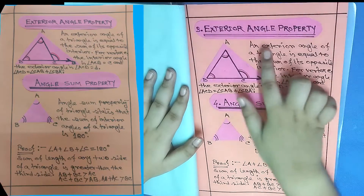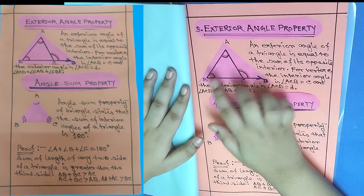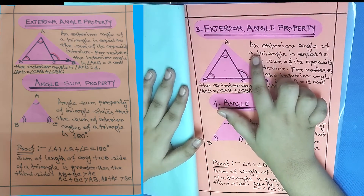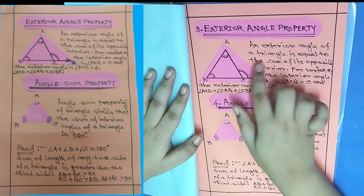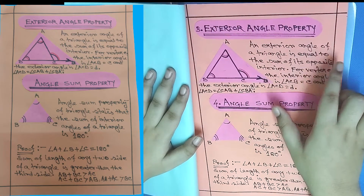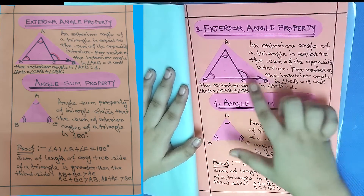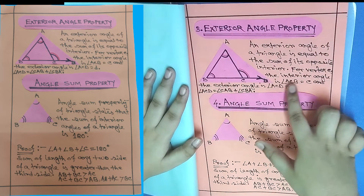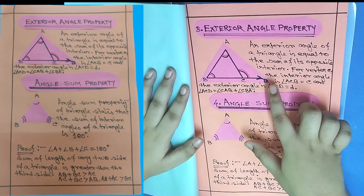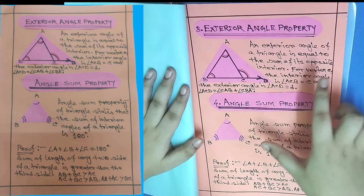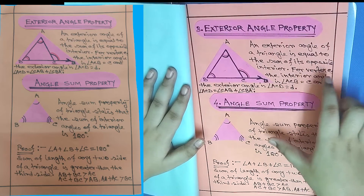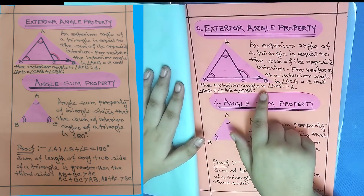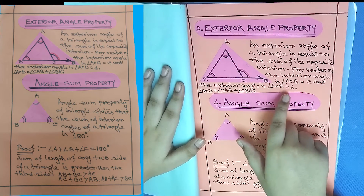Exterior angle property — an exterior angle of a triangle is equal to the sum of its opposite interior angles. The interior angle is angle ACB, and the exterior angle is angle ACD. So angle ACD equals angle A plus angle CBA.